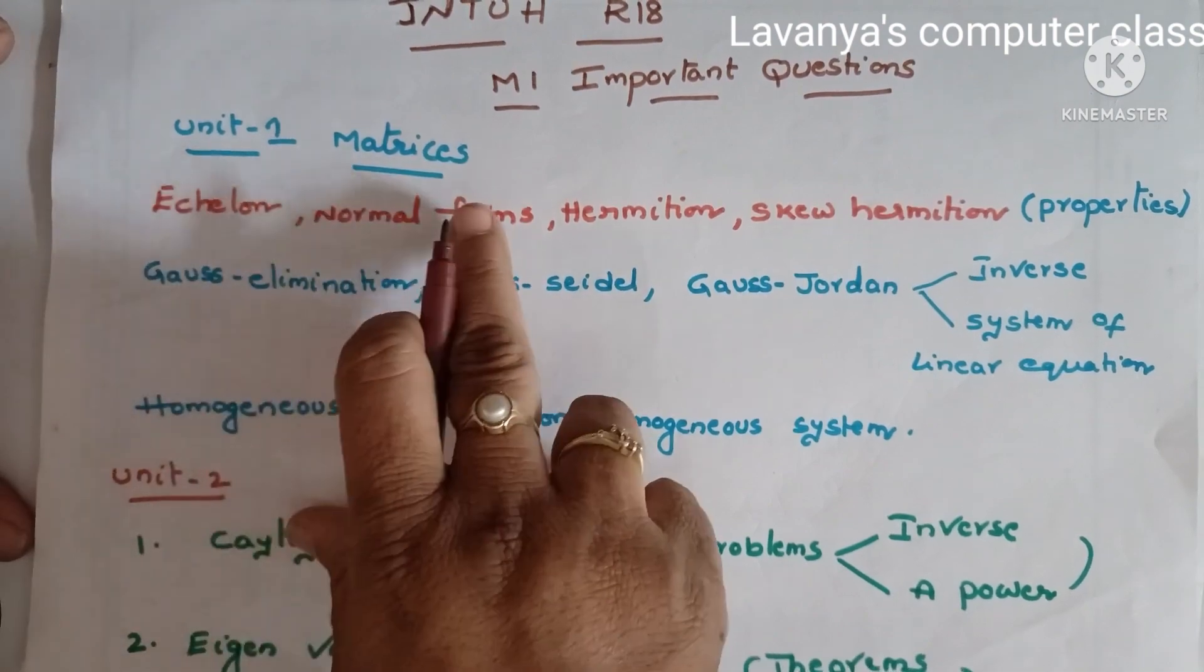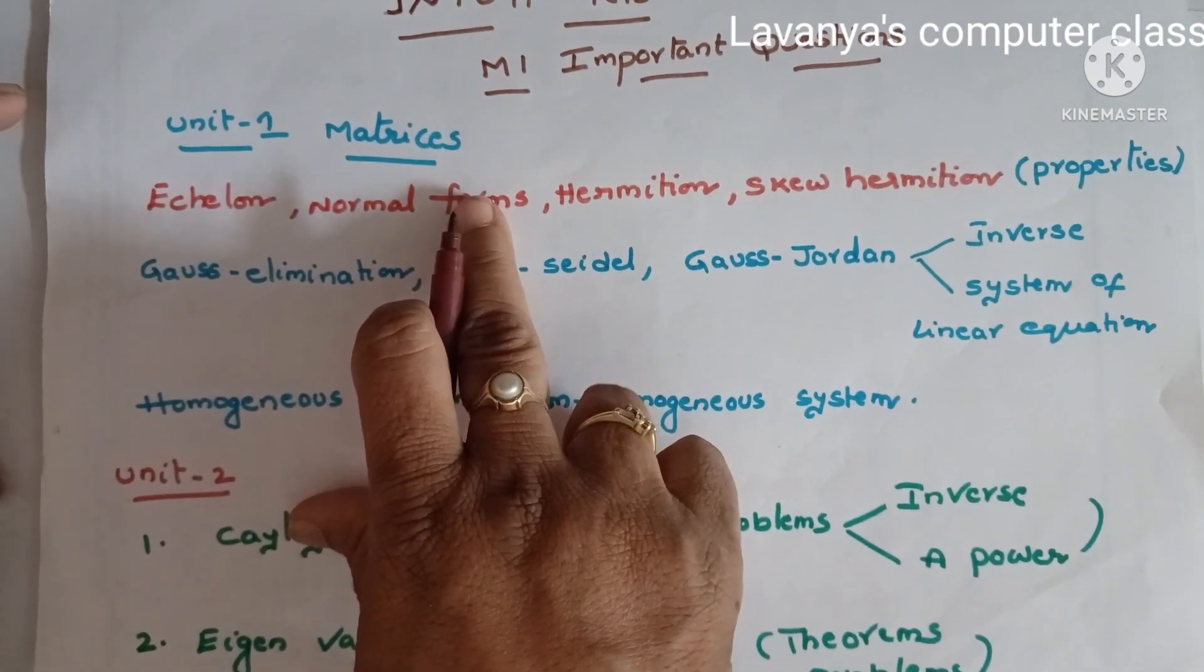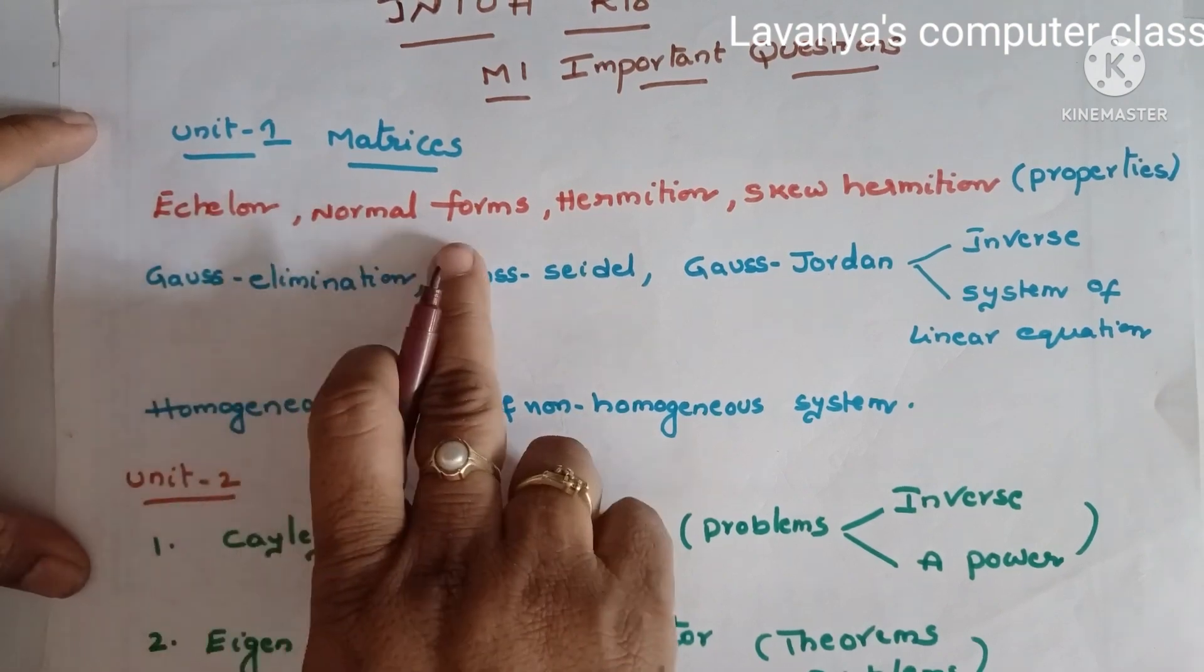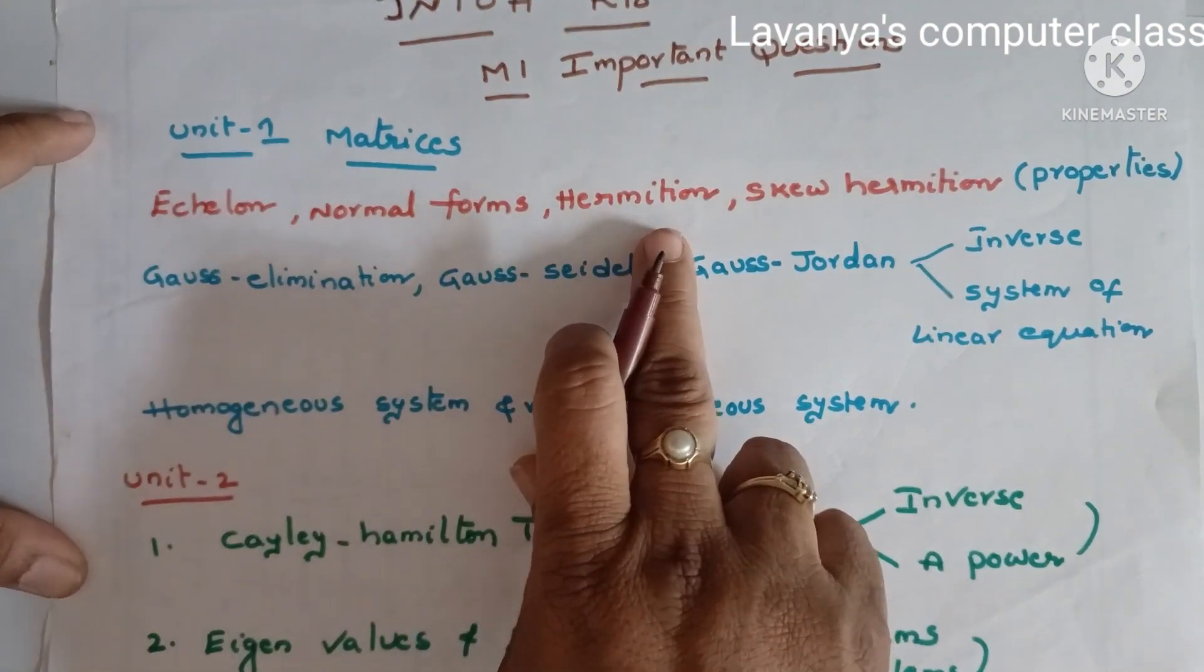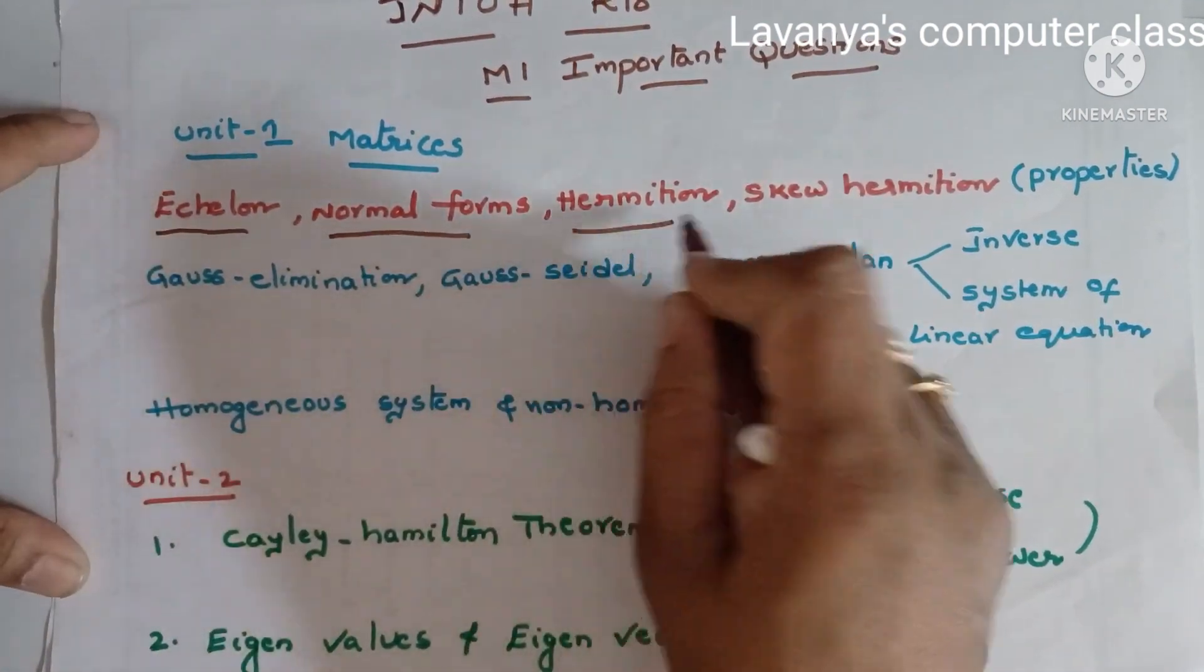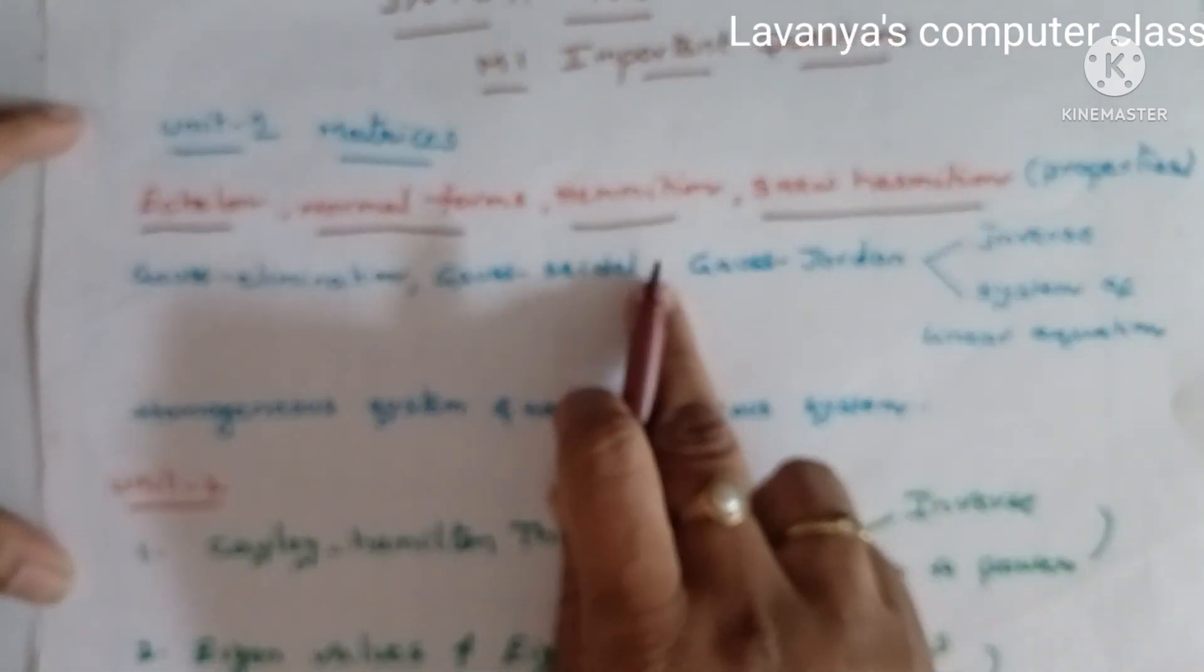First, unit one is matrices. In unit one, the important questions are echelon, normal forms, Hermitian, and skew Hermitian. If you read these questions, compulsory one question is coming from this chapter.